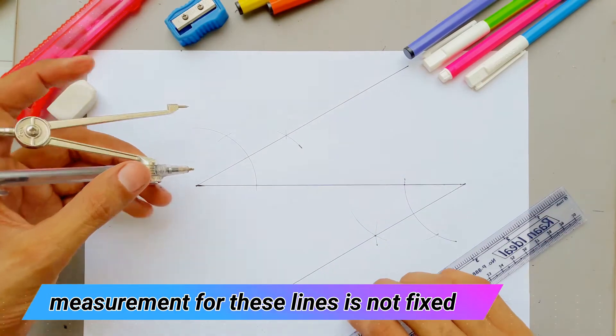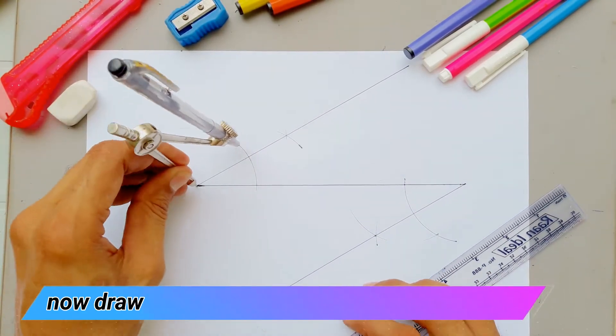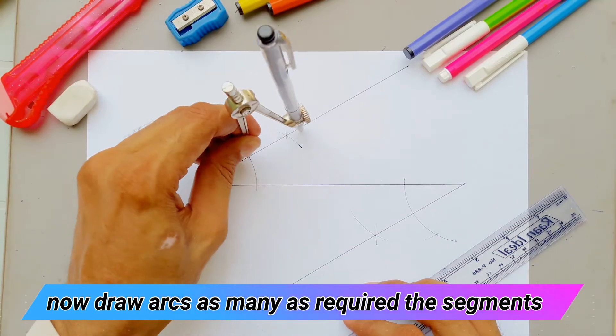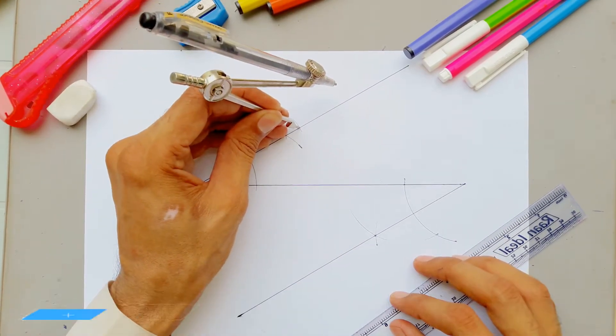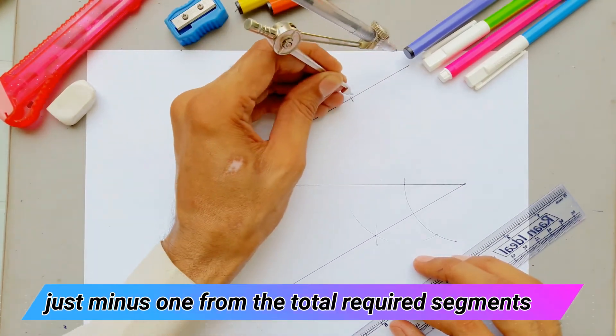After that we've to draw the arcs. If you want 5 segments you need 4 arcs. Just minus 1 from your total required segments.